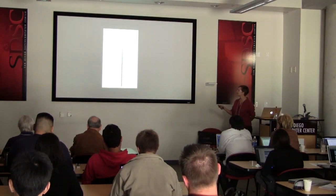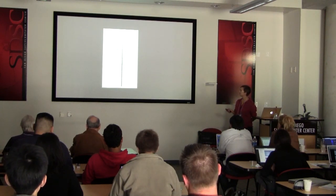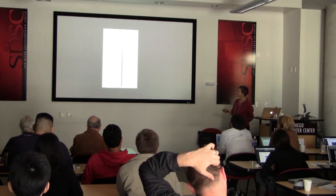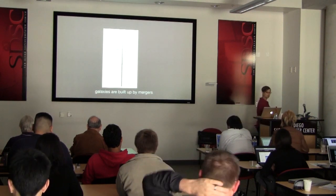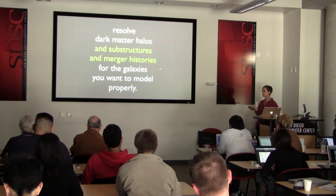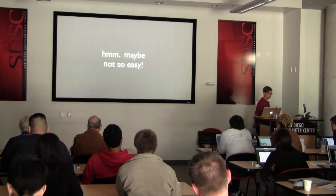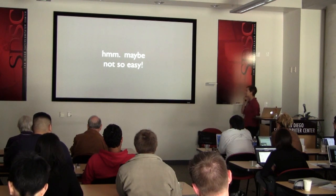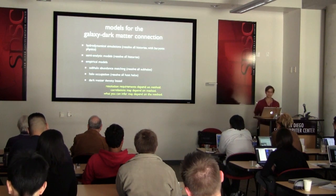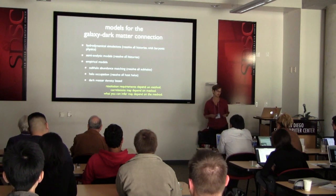Galaxies are built up in a series of mergers — in the merger tree, the dashed lines are after things become subhalos. What you actually want to do is resolve dark matter halos and substructures and merger histories for the galaxies you want to model properly. So maybe our goal of simulating 100 billion galaxies is not so easy. Let me just review some possible ways we could approach this modeling of galaxies.